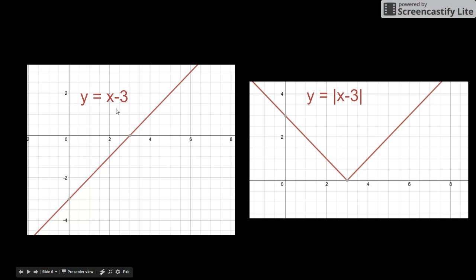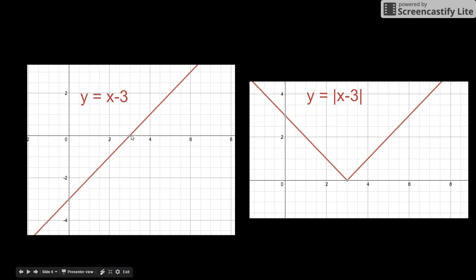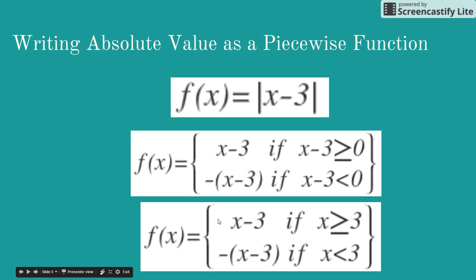Here's the graph of y = x − 3, a line through (3, 0). Function values are positive when x > 3 and negative when x < 3. For the absolute value, we don't change the right-hand side where x ≥ 3 — those values stay the same. We negate all the negative function values on the left side to make them positive. That's why we have two pieces: keep the input when x ≥ 3, and negate it when x < 3.